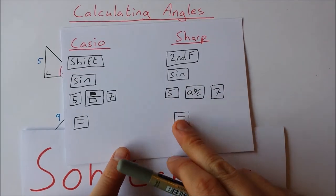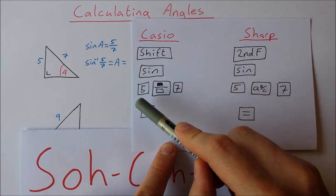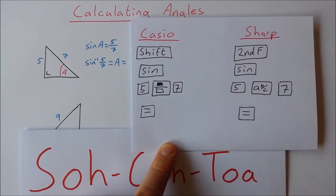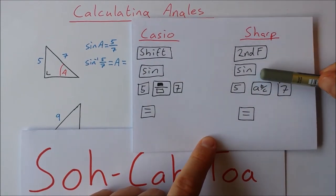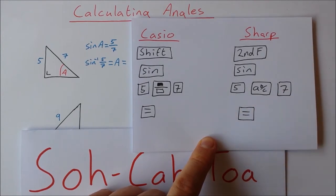So if you're on a Casio you press shift sine 5 fraction button 7 equals. If you're on a sharp calculator you press second function sine 5 fraction button 7 equals.